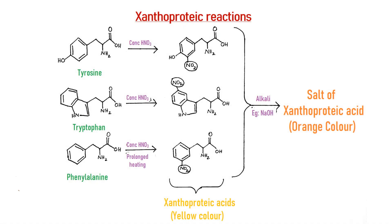The Xanthoproteic test is based on the principle that aromatic groups in the amino acids or proteins are nitrated by heating with concentrated nitric acid to yield yellow colored nitro derivatives called Xanthoproteic acid. Upon the addition of an alkali, the Xanthoproteic acid turns orange due to the formation of a salt of this nitro compound. The aromatic amino acid phenylalanine gives a weak positive reaction only after an extended period of heating, because the phenyl group in phenylalanine is quite stable and doesn't react with nitric acid under normal conditions.